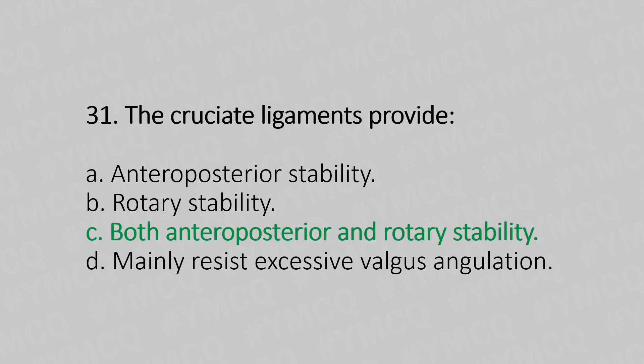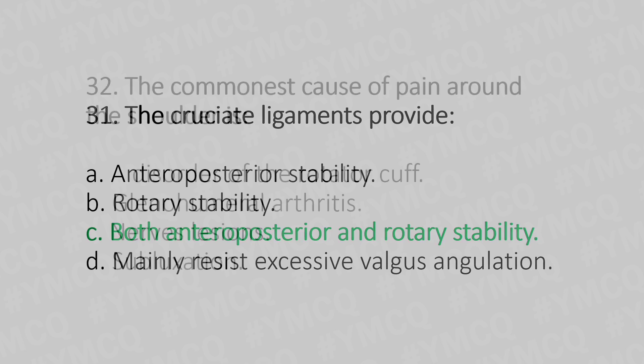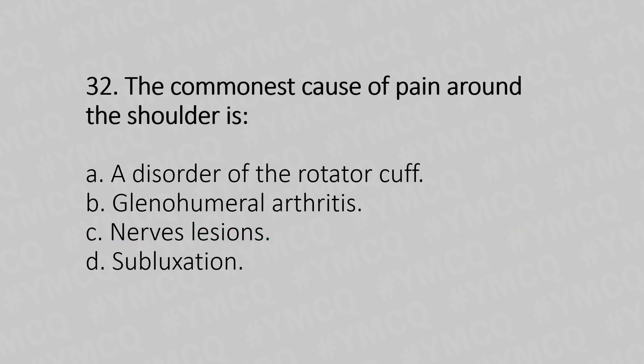Now let's move to question number 32. The commonest cause of pain around the shoulder is: Option A, a disorder of the rotator cuff. Option B, glenohumeral arthritis. Option C, nerve lesion. Option D, subluxation. And the answer is Option A, a disorder of the rotator cuff.